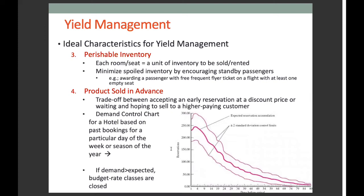Another characteristic is perishable inventory. For capacity-constrained service firms, each room or seat is a unit of inventory to be sold — actually rented. As noted for airlines, revenue from an unsold seat is lost forever, and airlines attempt to minimize this spoiled inventory by encouraging standby passengers. Given this time-perishable nature of an airline seat or hotel room, airlines or hotels may reward some passengers with a free frequent flyer ticket on a flight that has at least one empty seat.